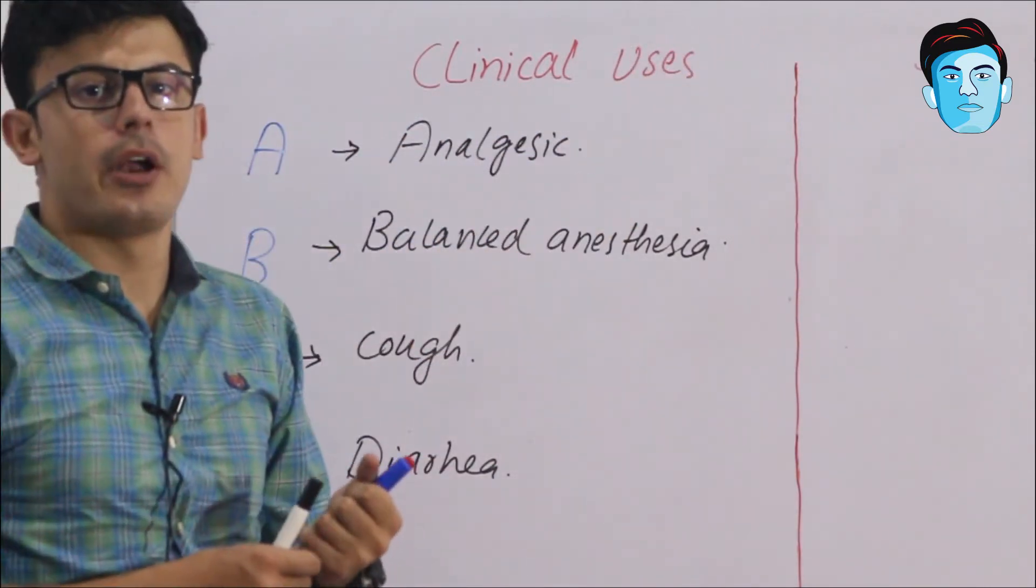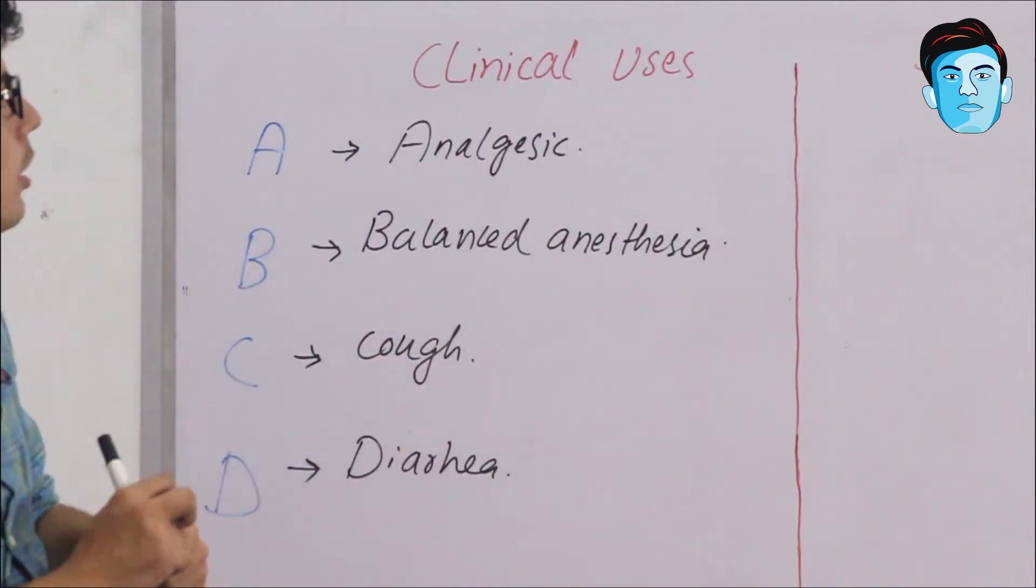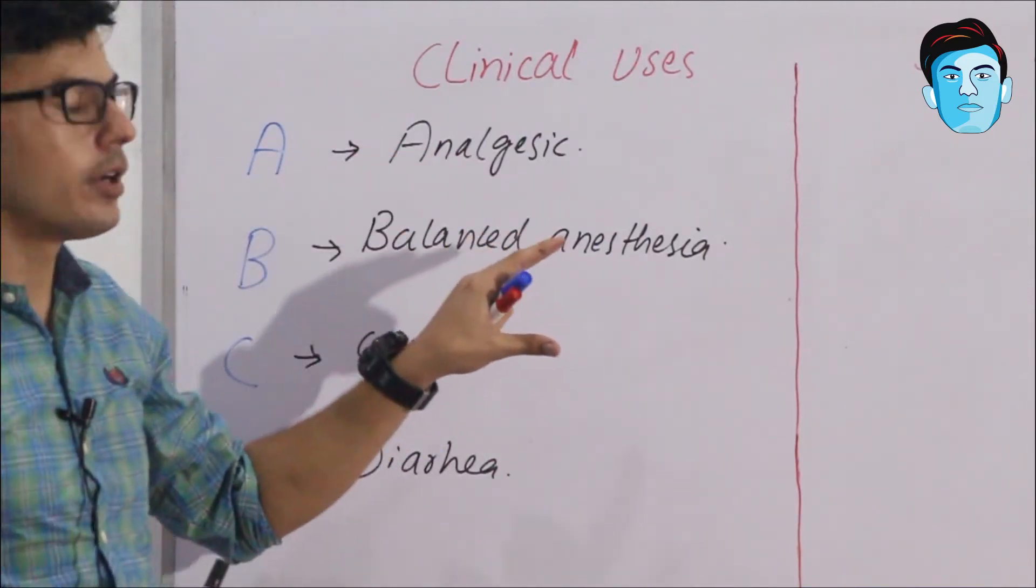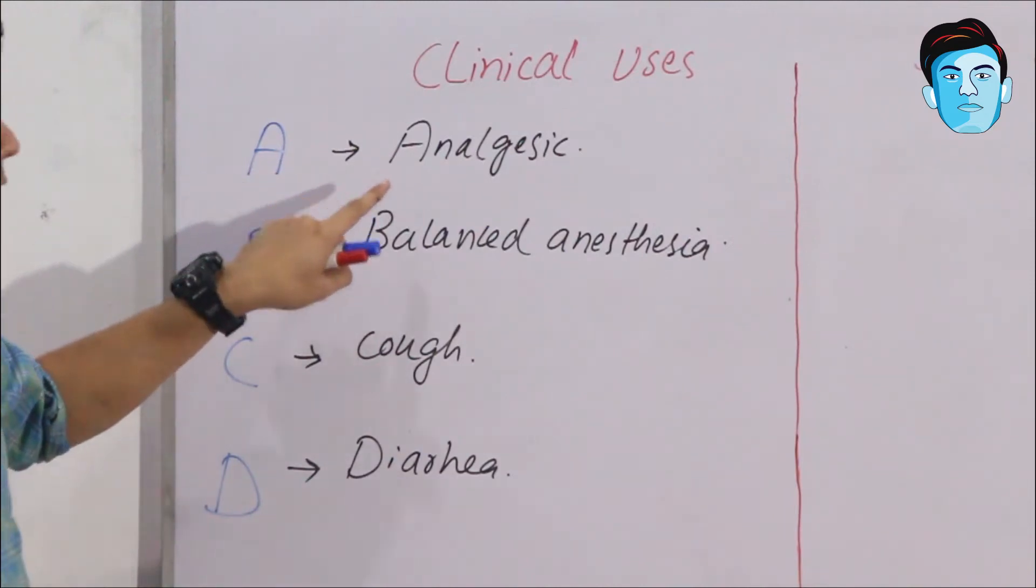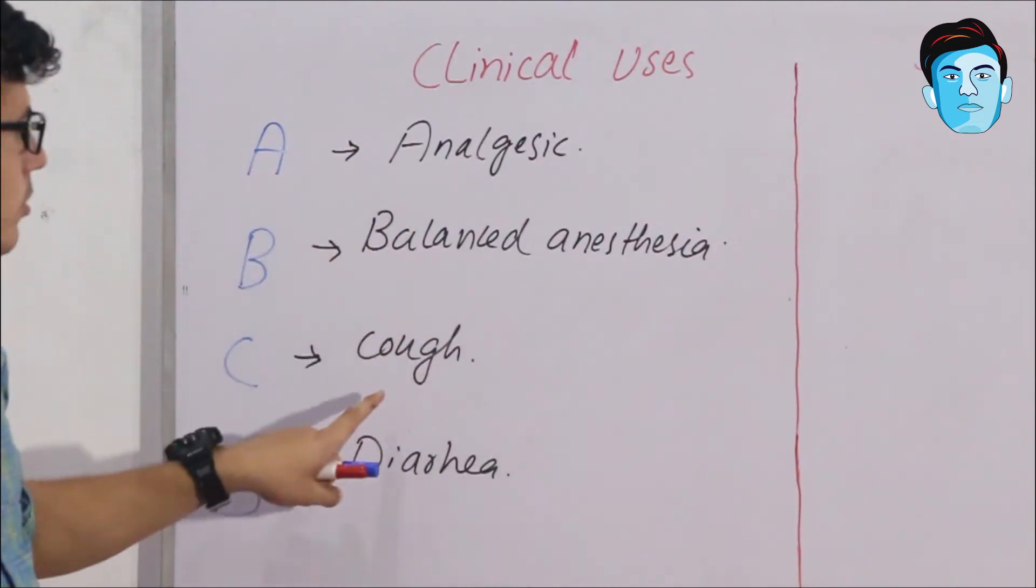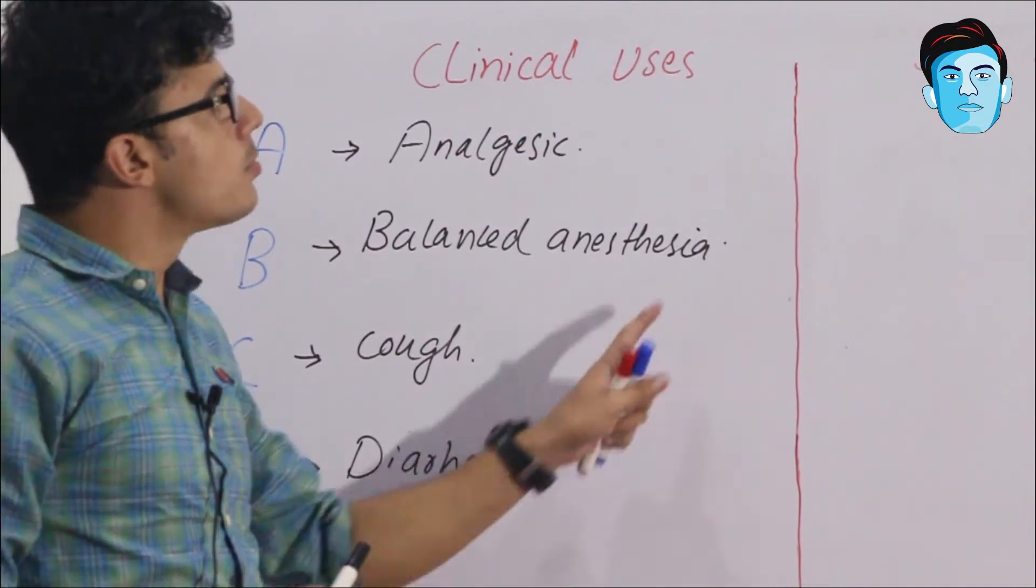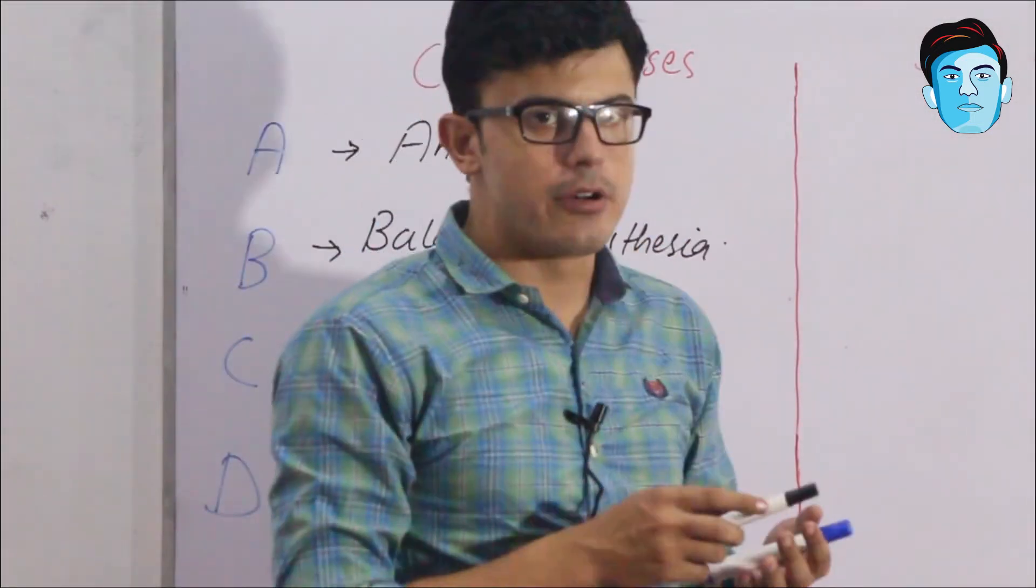There are many clinical uses of opioid drugs, but the important ones you need to know are: analgesic, balanced anesthesia, cough, and diarrhea. Now let's move toward the side effects of opioid drugs.